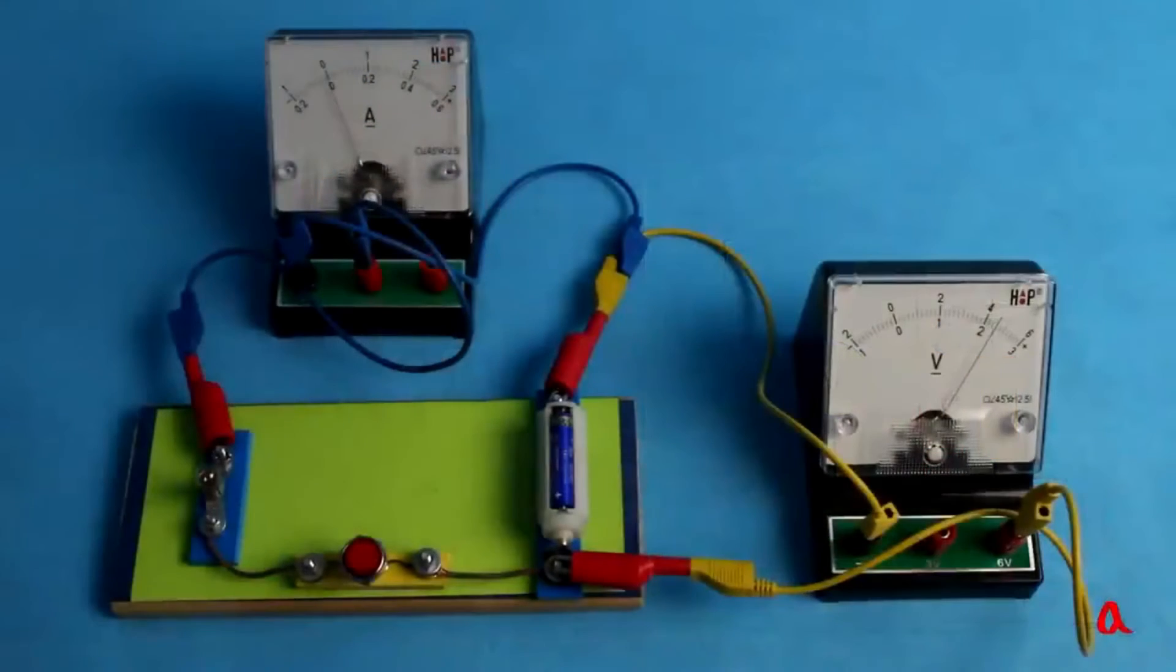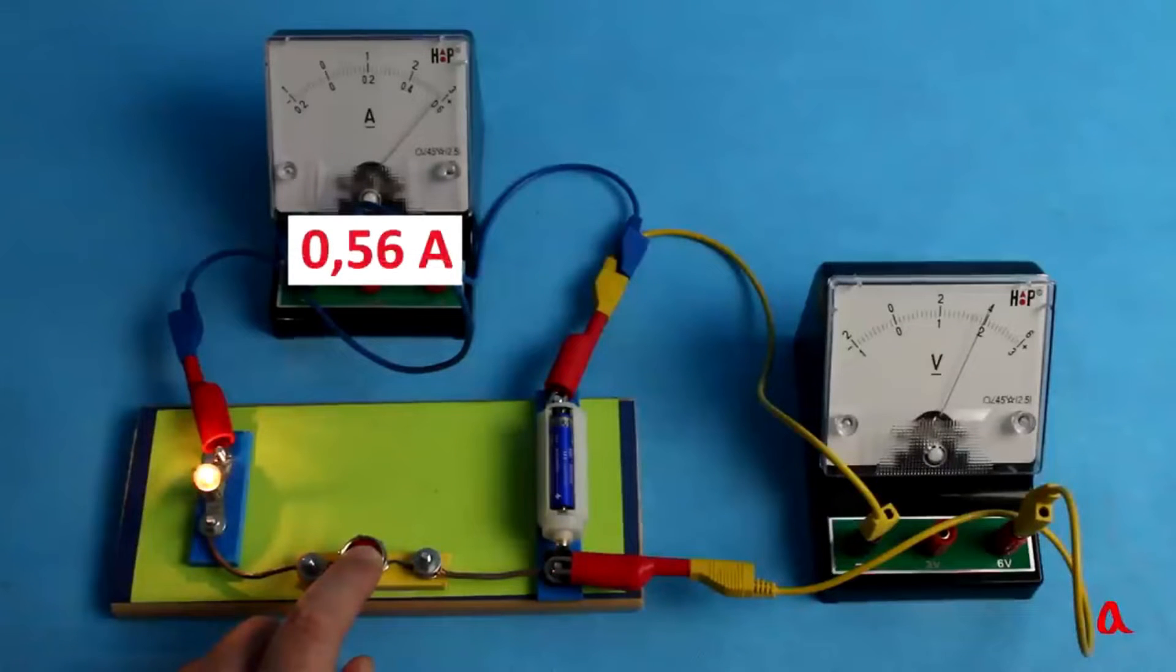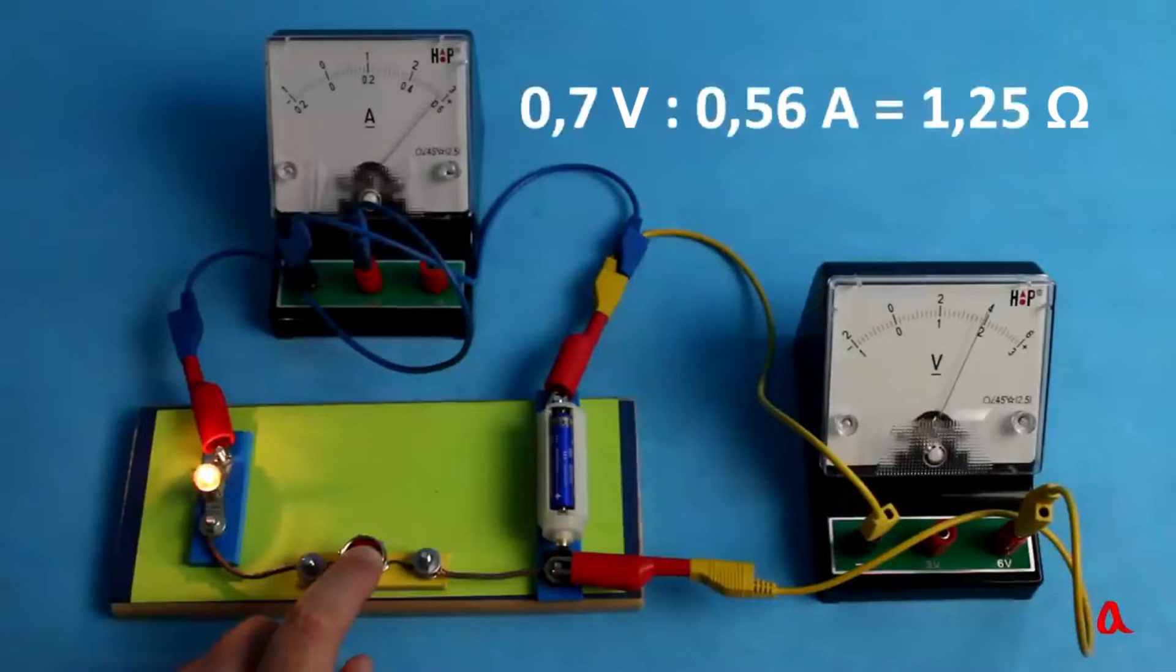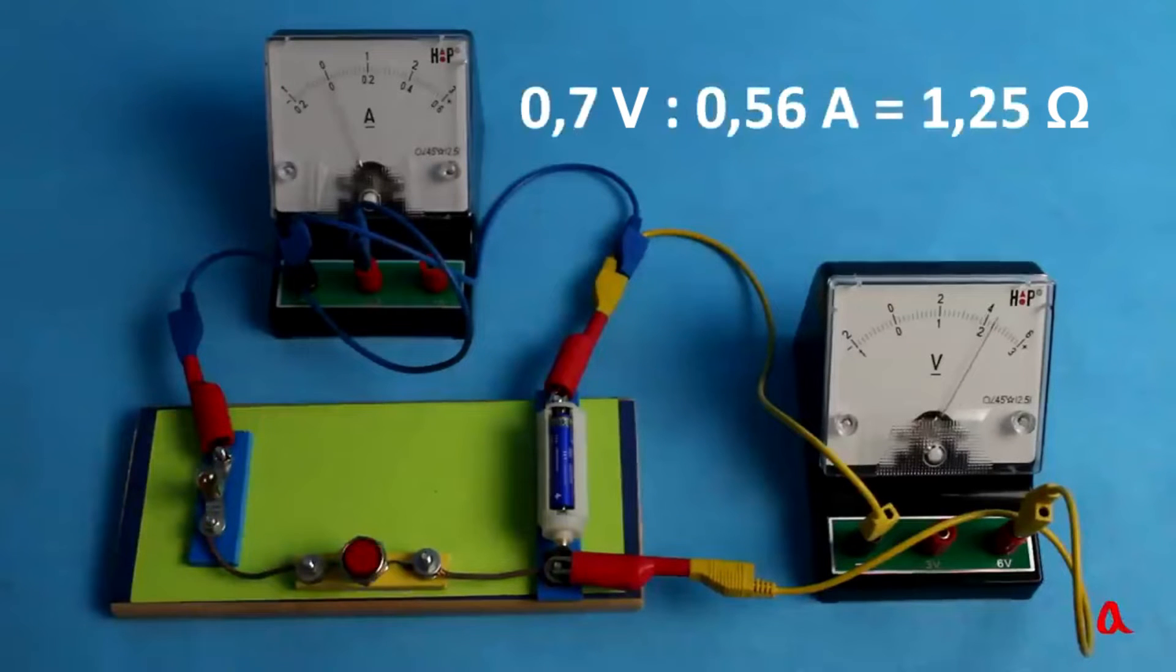Close the circuit. Voltmeter reading decreased by 0.8V and the ammeter shows the current 0.56 Amperes. To find the internal resistance we should divide the voltage 0.8V by the current 0.56 Amperes, which gives 1.25 Ohms. And this is the internal resistance of our battery.